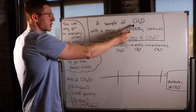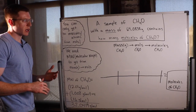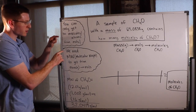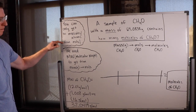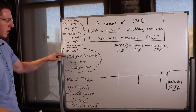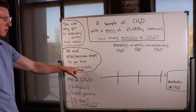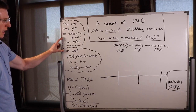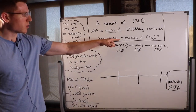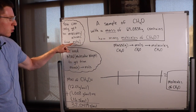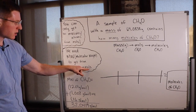This next problem asks: a sample of CH4O with a mass of 64.0838 grams contains how many molecules of CH4O? Notice they're asking you to go from mass to molecules. The key things to remember: you can only get to molecules or atoms from moles. And we need molecular weight — also called formula weight or molar mass — to get from mass to moles. We were given a mass in grams and asked to go to molecules, so we need moles as an intermediate step.